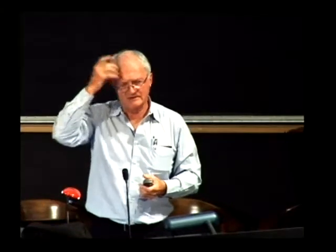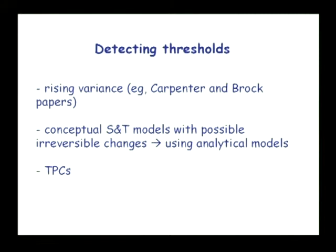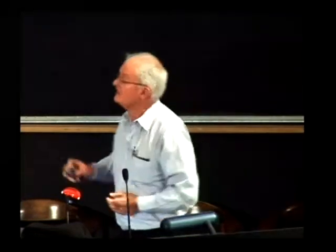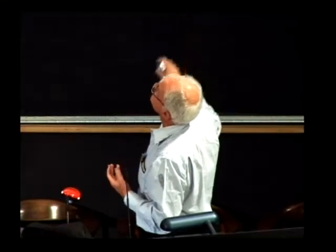How about detecting thresholds — how do you know where they are? This is an area that needs a lot of research. Three kinds of things are being used. Many will be aware of Steve Carpenter and Buzz Brock's papers on using rising variance: as you approach a threshold, the variance in the fast variable increases over time, then it flips into the new state. The problem is that the amount of time you need to record a change in variance is often longer — you've actually gone over the threshold before you can pick it up. So although it's true, it may not help much in management.